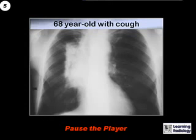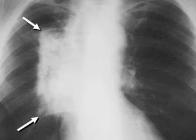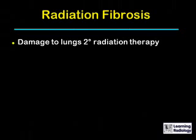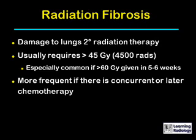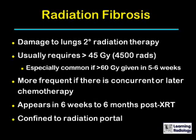The next case is a 68-year-old with a cough; you're looking at a chest x-ray. This soft tissue density in the right hilar region is unusual because of its relatively straight edges and 90-degree angles, which mark it as a manifestation of radiation fibrosis. Radiation fibrosis occurs when there is damage to the lung secondary to radiation therapy. It usually requires in excess of 45 gray (4,500 rads), and is especially common if more than 60 gray (6,000 rads) are given in a five- to six-week period. It is more frequent if there is concurrent chemotherapy administered after the radiation. It generally appears within six weeks to six months following radiation therapy, and it is confined to the radiation portal.